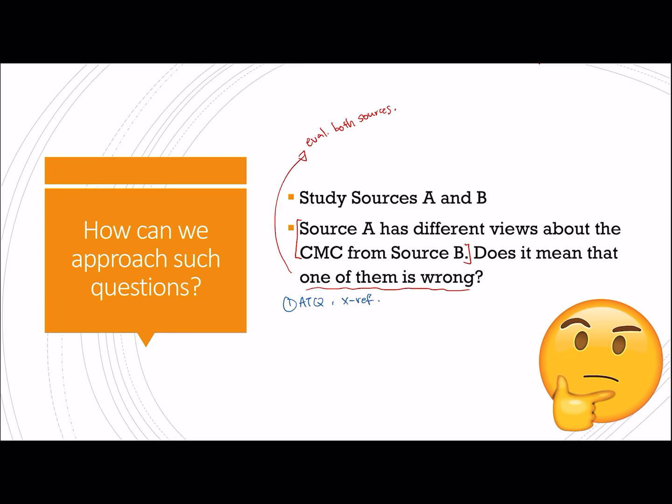Why do we still need to cross-refer, even though they have already established that they have two different views? For such questions, you always need to tell us first the two sources stated in the question, what is the point that they are trying to make?